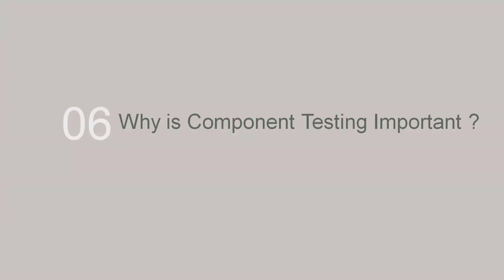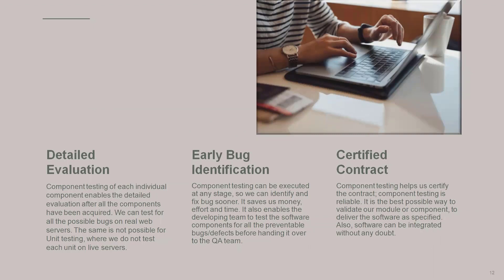Why is component testing important? While doing component testing, testers perform detailed evaluations of any functionality or product. Each individual component enables detailed evaluation, and after all components are acquired, we can test for all possible bugs on a real web server — which is not possible with unit testing. Second, early bug identification: component testing can be executed at any stage to verify whether a component is working. In agile methodology, components are tested in early phases so defects are found early, saving cost, effort, and time.